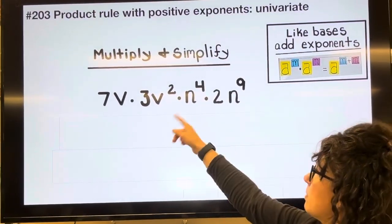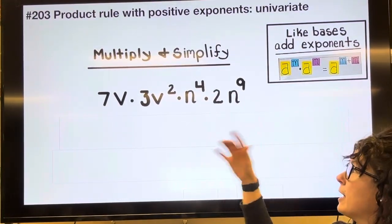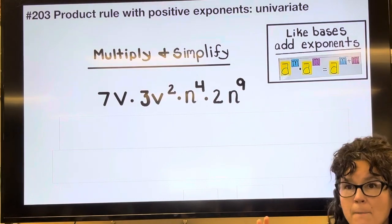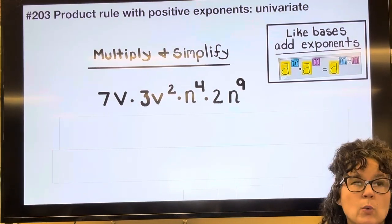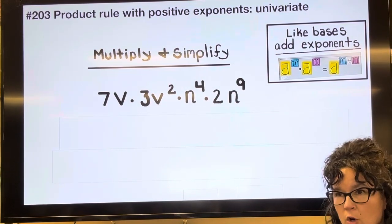If I want to multiply this together and then simplify, we're keeping in mind that multiplication is commutative so we can multiply in any order that we want.